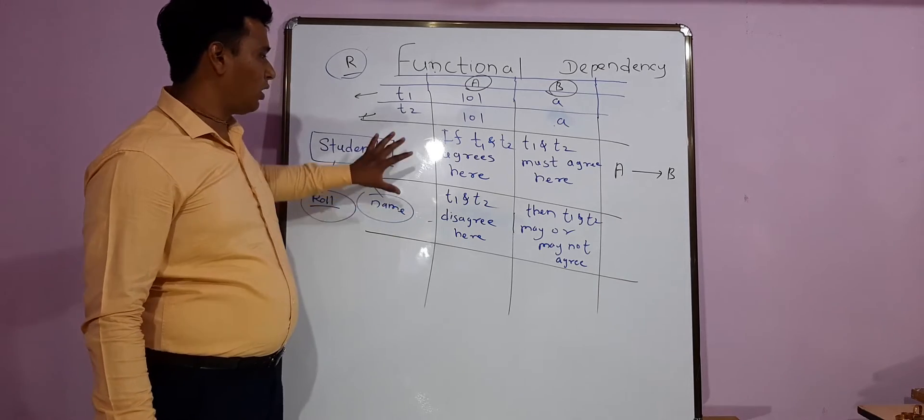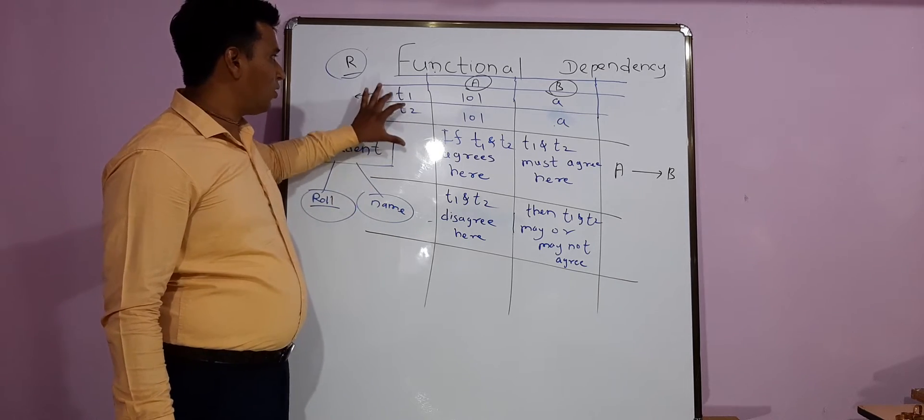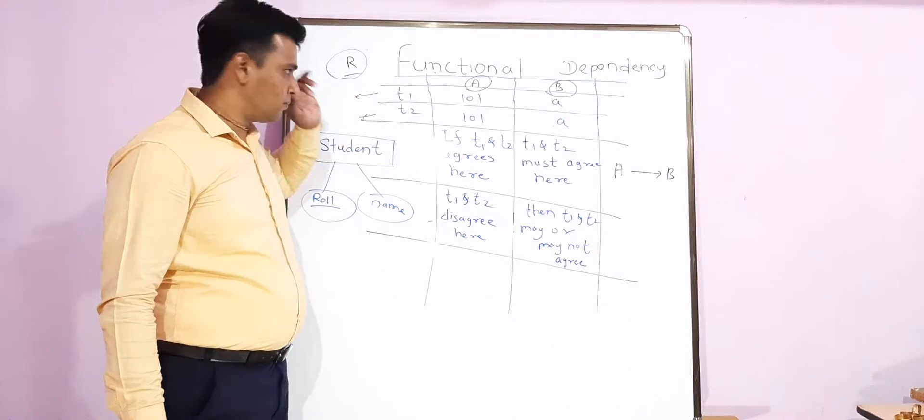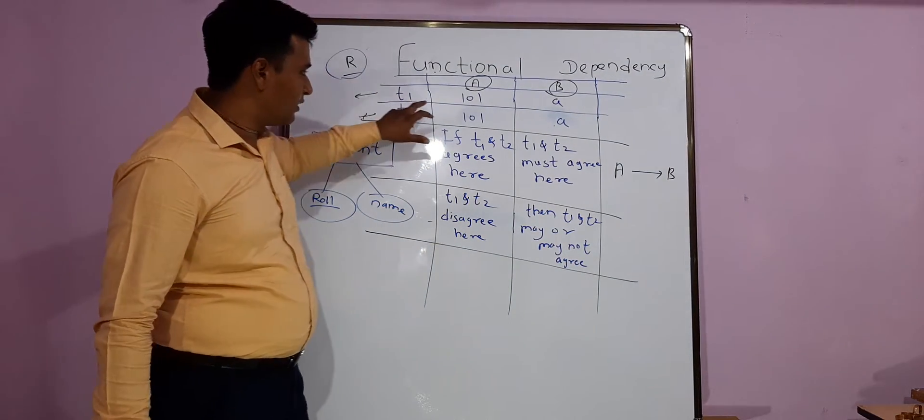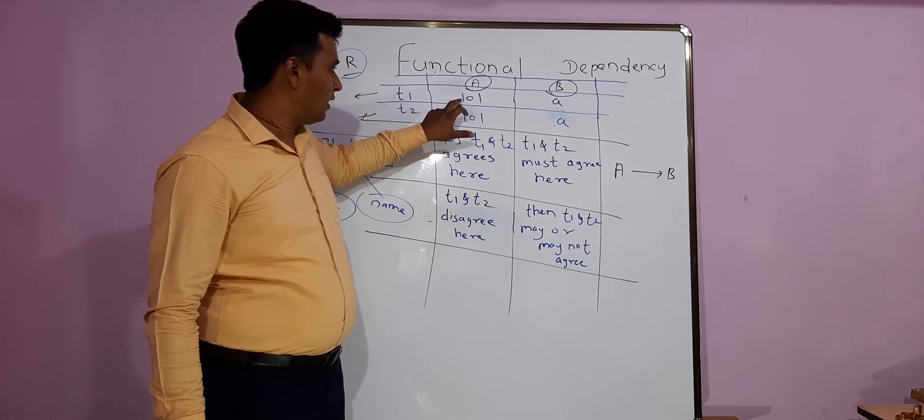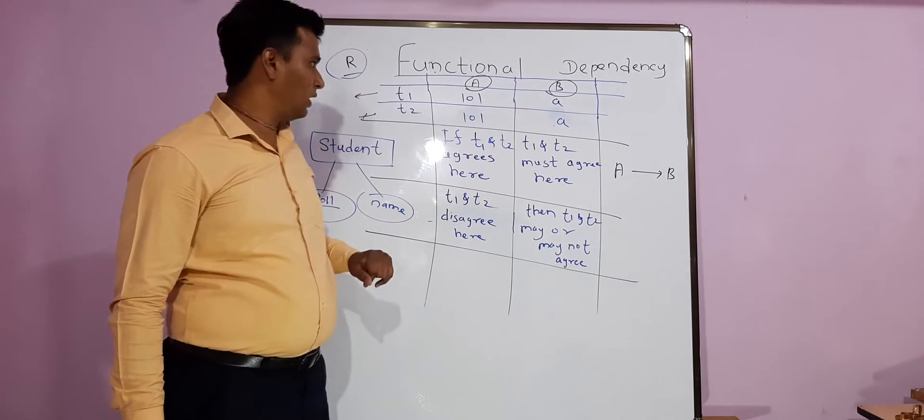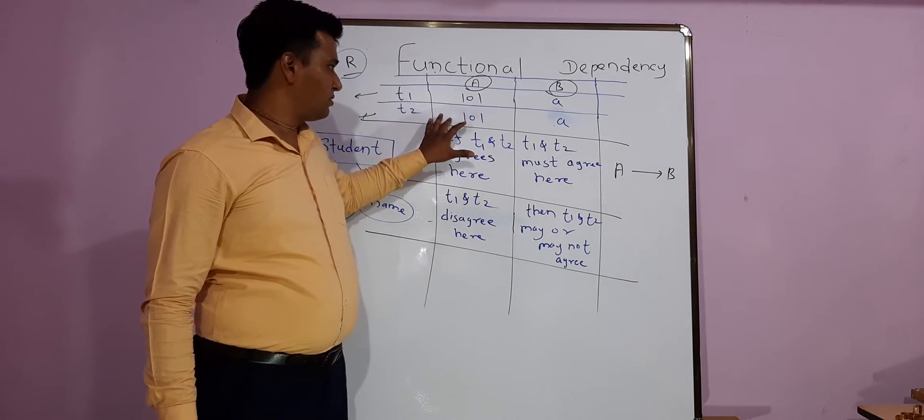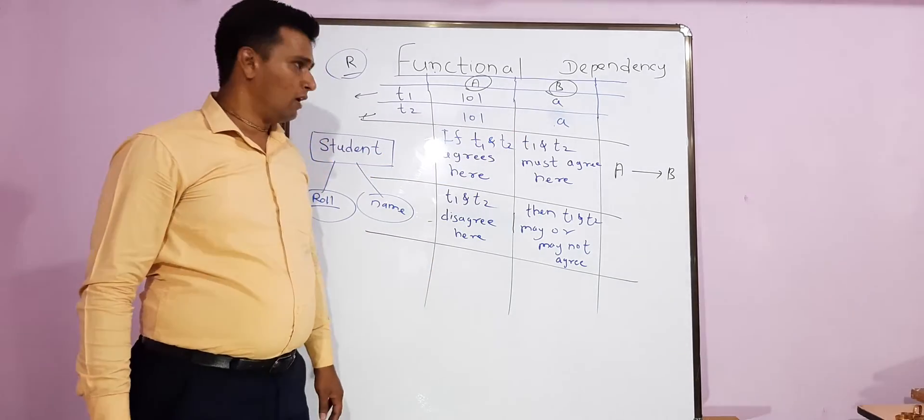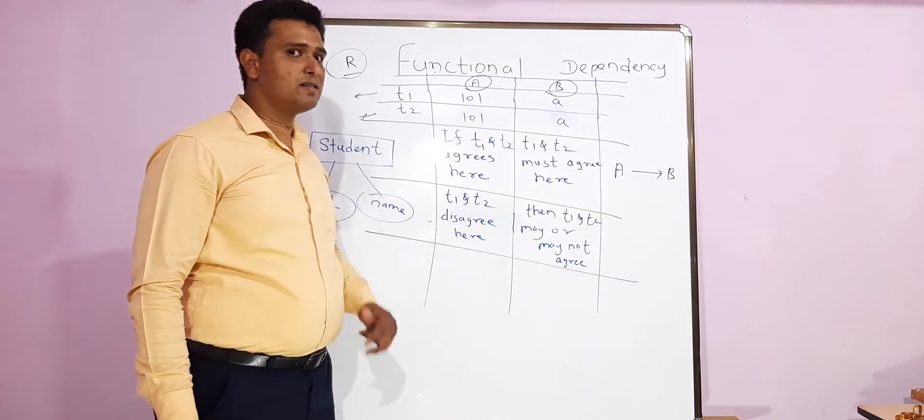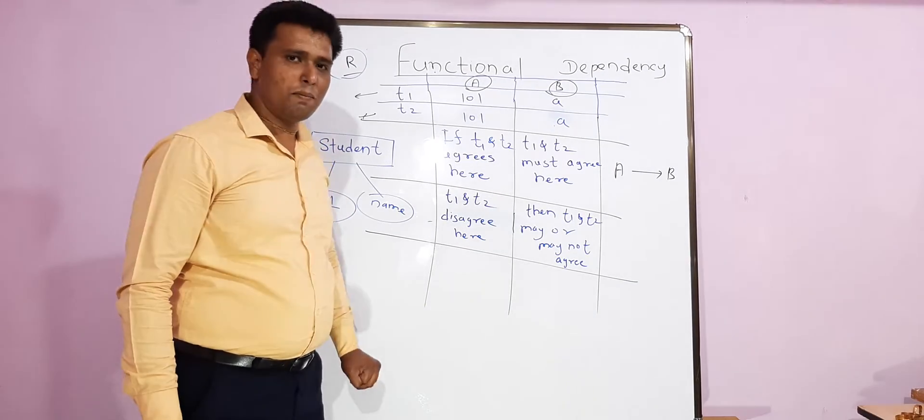Now understand what I have written here. T1 and T2 are called as tuples, so records are called tuples in the relational database management system. So now T1 having the records like 101 is A and B represents small a. Again T2 representing 101 as well as A. Now if you have to find out the functional dependency.